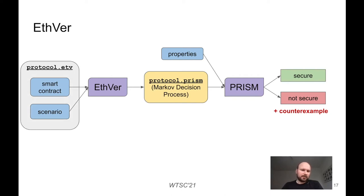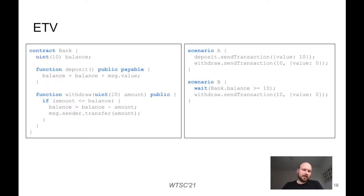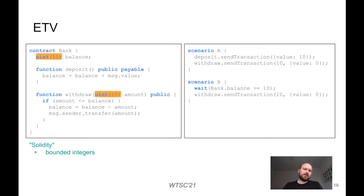The input to Edver — the smart contract and scenario — is stored in an ETV file, which is our dedicated syntax. In the ETV file, the left-hand side shows the contract part and the right-hand side shows the scenario part. The contract syntax is very similar to Solidity with some minor differences. The main difference is the bounded integer type, which we introduced to limit the size of variables, because the size of the model depends on the number of valuations of variables, so we want to keep the model as small as possible.